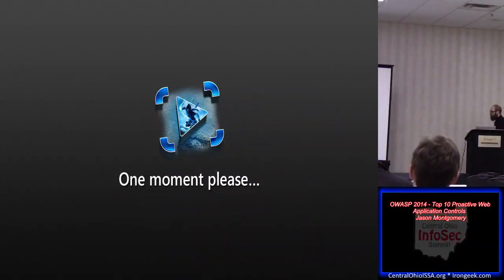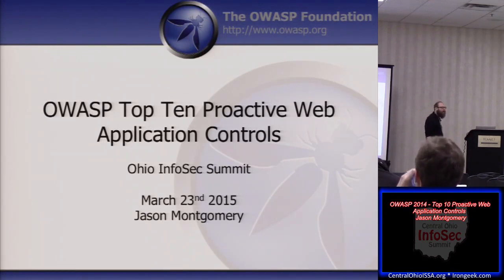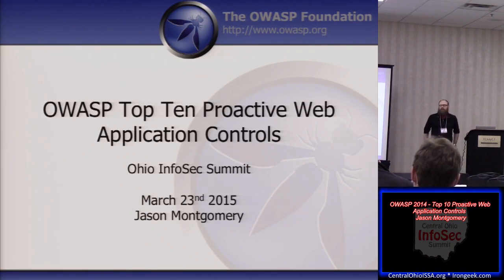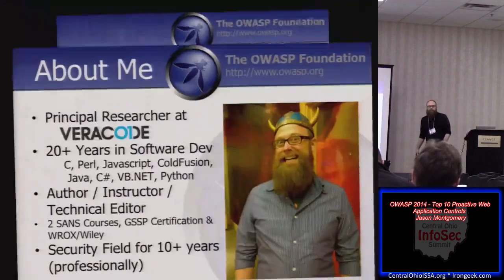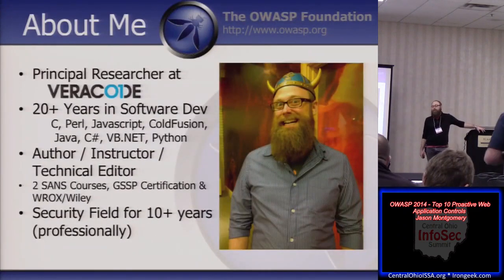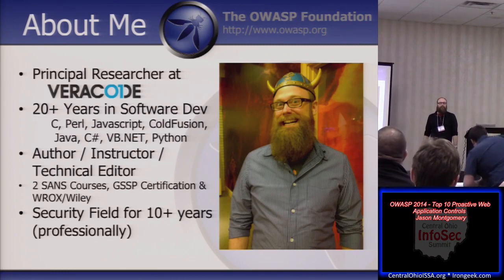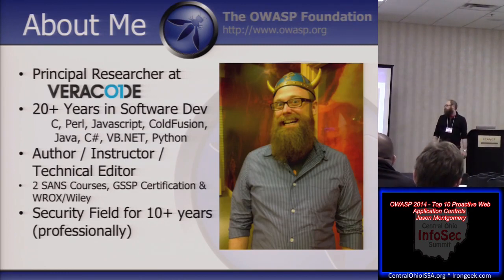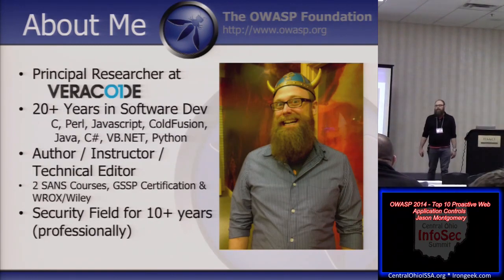Today I'm going to talk about the OWASP Top 10 Proactive Web Application Controls. This is a new paper put out by OWASP by Jim Manico and Jim Bird. It's similar to the OWASP Top 10, but it focuses on the most important things and puts them in a different priority. My name is Jason Montgomery, I'm an application security specialist. I work for Veracode. We do binary static analysis and dynamic analysis — basically finding flaws in your code through your binaries and presenting ideas on how to fix them.